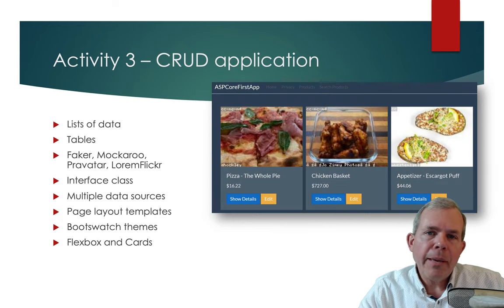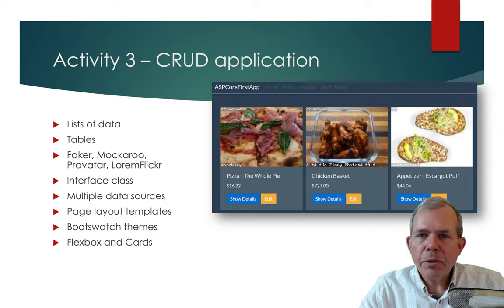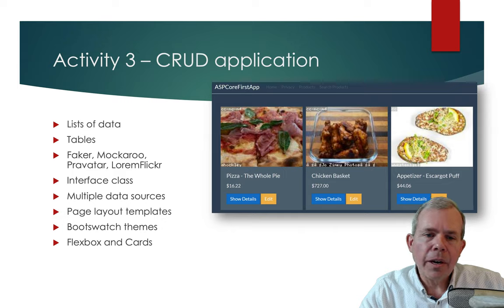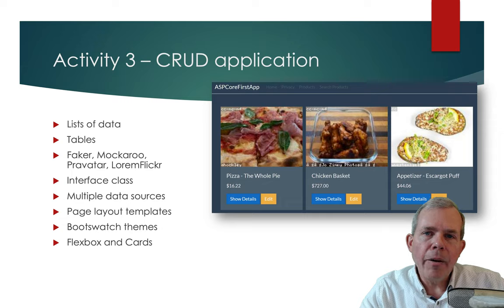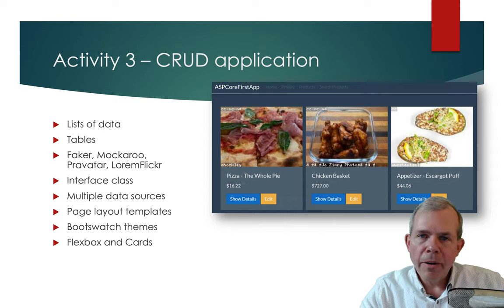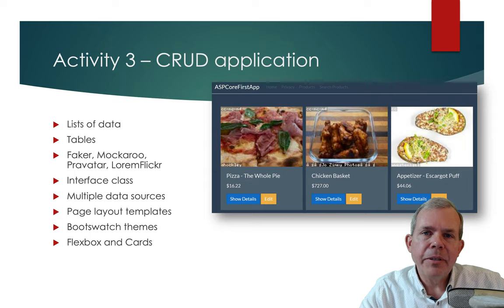Then we're going to change our table into a set of cards. Each product will be on its own card — a picture, some text, and maybe some buttons — displayed on a flexible layout so that when the website gets narrow, the cards automatically reshuffle. This will require us to do some things with CSS and the Flexbox tool.